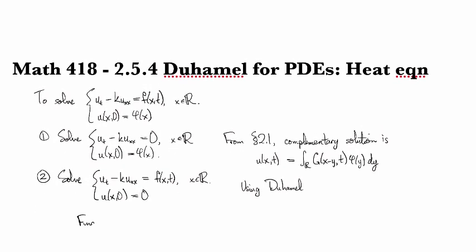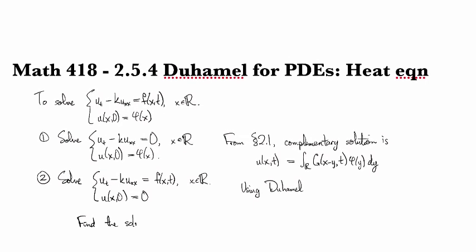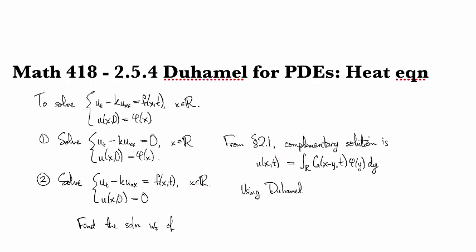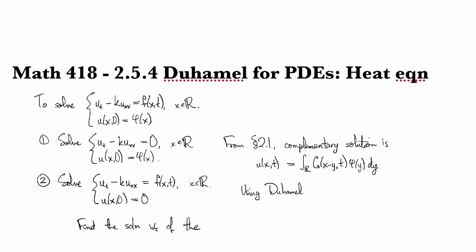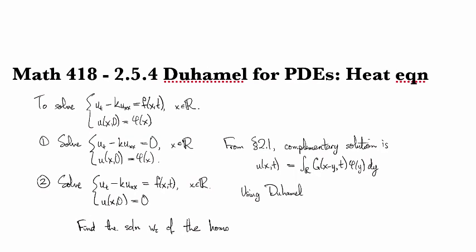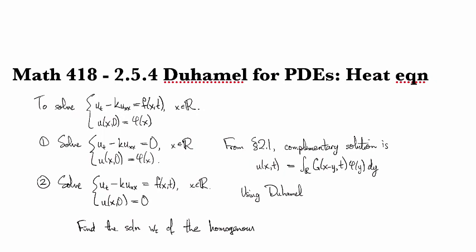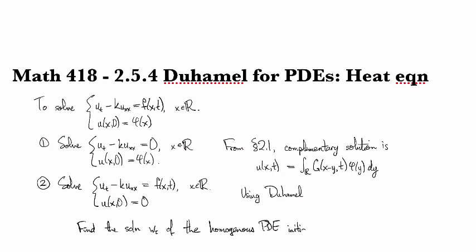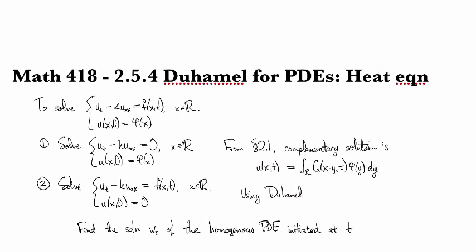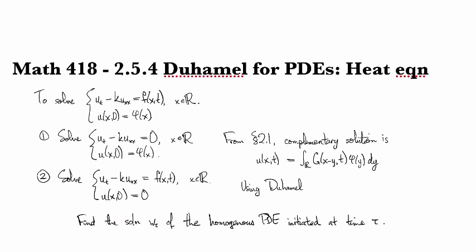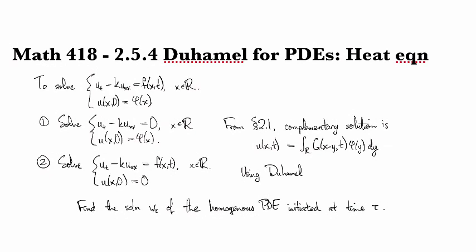and we do this one using Duhamel's principle. So, first we find the solution w(tau) of the homogeneous PDE initiated at time tau. So, you think about waiting for a while until time tau, and then you give it the initial condition and let it go and see how heat evolves the solution forward in time.